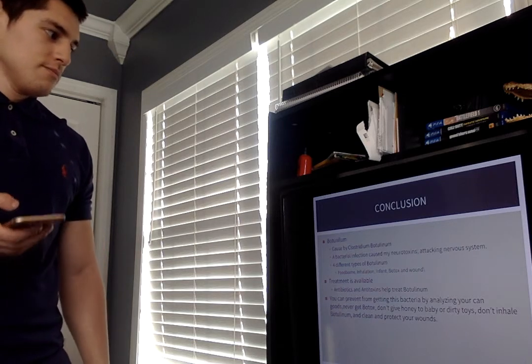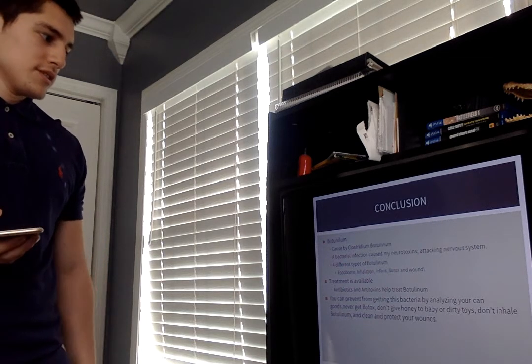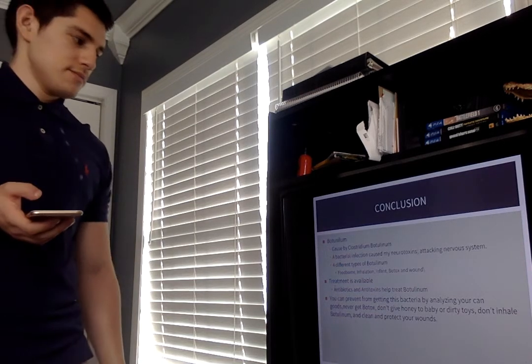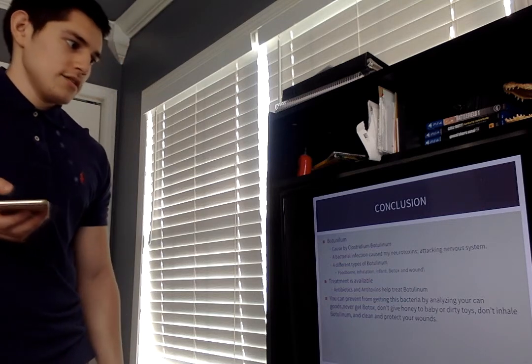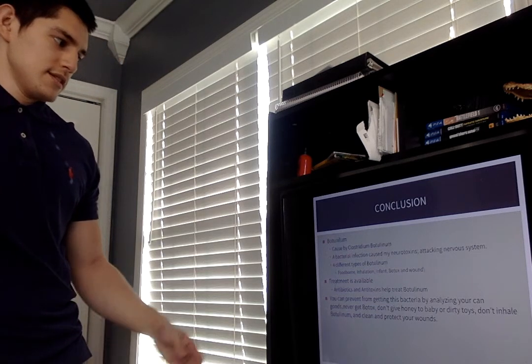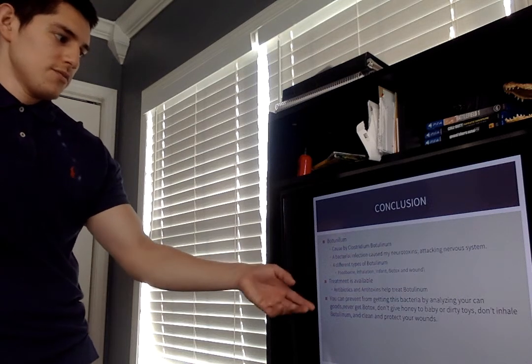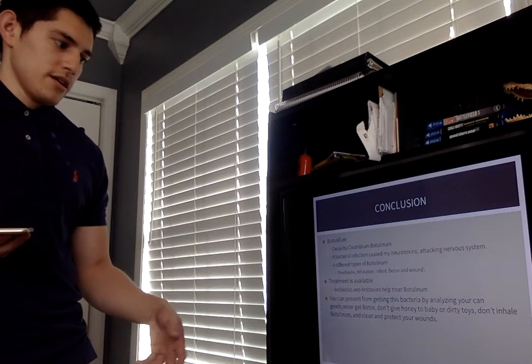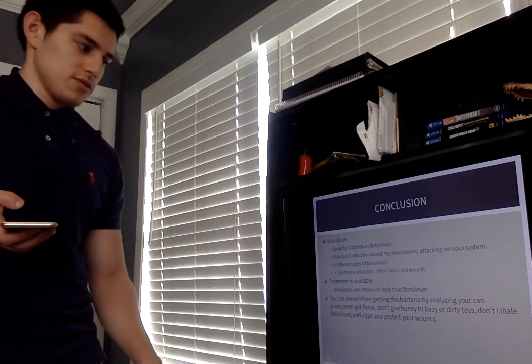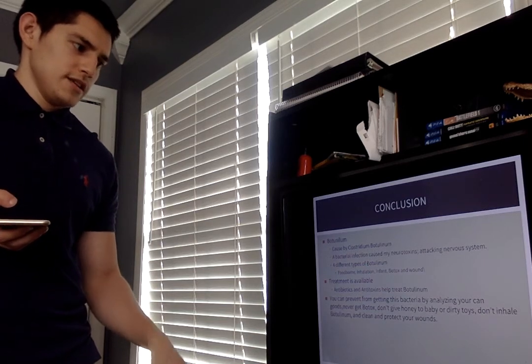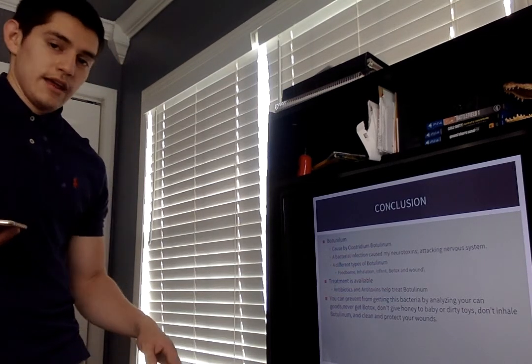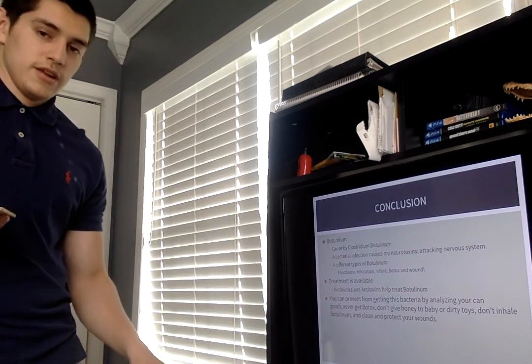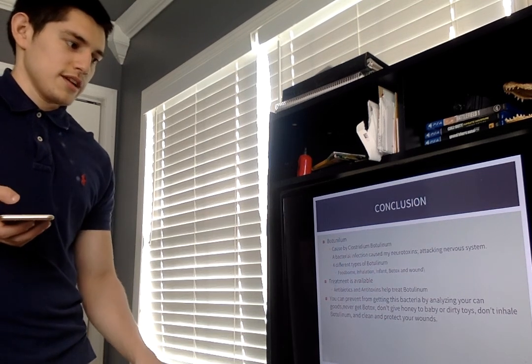Conclusion. Botulinum is caused by Clostridium Botulinum. The bacterial infection is caused by neurotoxins attacking the nervous system. Four different types of botulinum is foodborne, inhalation, infant, Botox and wound. Treatment is available. Antibiotics and antitoxins help treat the botulinum. You can prevent getting this bacteria by analyzing your canned goods. Never get Botox. Don't give honey to babies or dirty toys. Don't inhale botulinum and clean and protect your wounds.